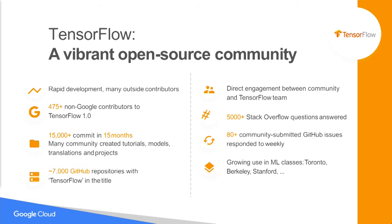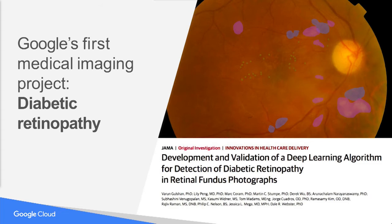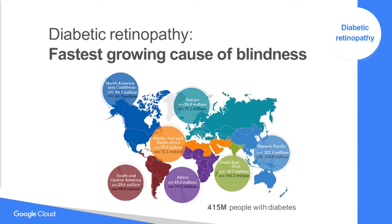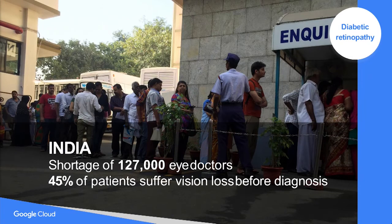Google's first endeavor to use machine learning in medical imaging was in the area of diabetic retinopathy — an incredible project from the Google Brain team, who are my close collaborators. They pursued this area specifically to address needs in the developing world. Diabetic retinopathy is the fastest-growing cause of blindness, with a disproportionate burden in the developing world. In India alone there's a shortage of 127,000 ophthalmologists to evaluate these images, and in that one area of the world, 45% of patients suffer blindness before a diagnosis — in a very treatable disease.